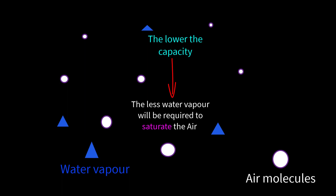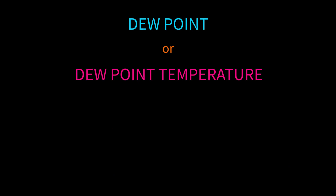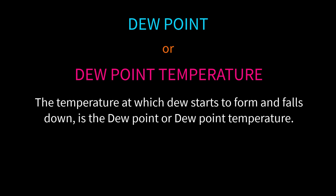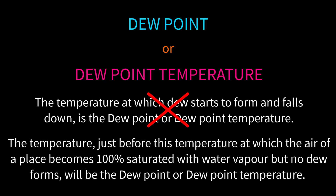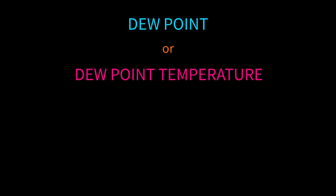Now we will learn about dew point or dew point temperature. Many of you think that the temperature at which dew starts to form and fall down is the dew point — that is absolutely wrong. The dew point temperature is actually the temperature just before dew forms, at which the air becomes 100% saturated with water vapor but no dew has yet formed.